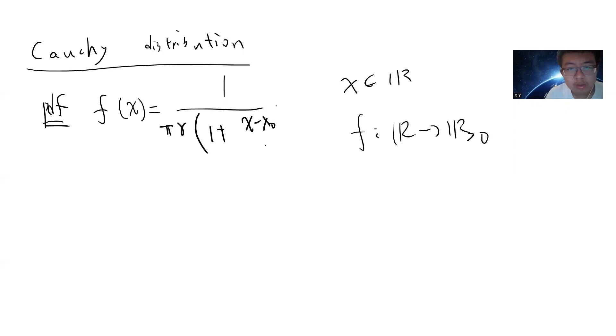This is defined as 1 over π·γ times (1 + ((x - x₀)/γ)²), where x₀ and γ are two variables or parameters.